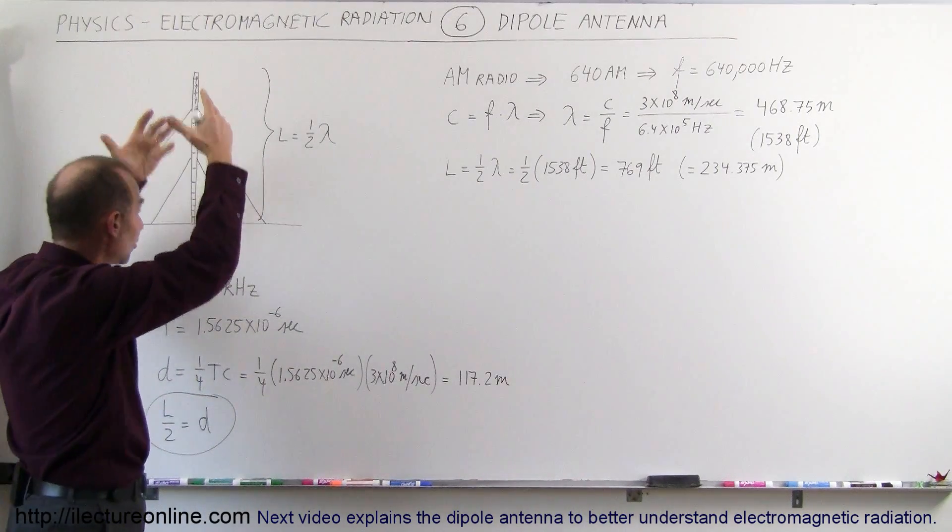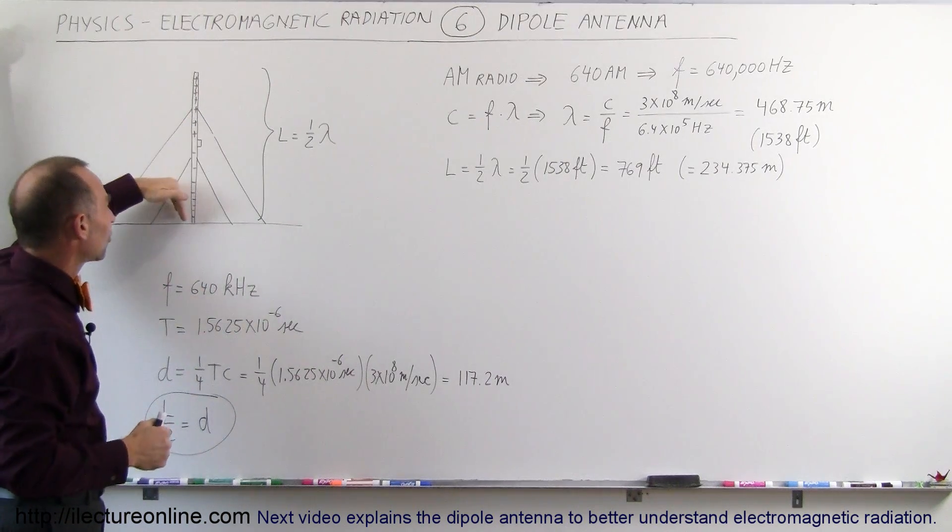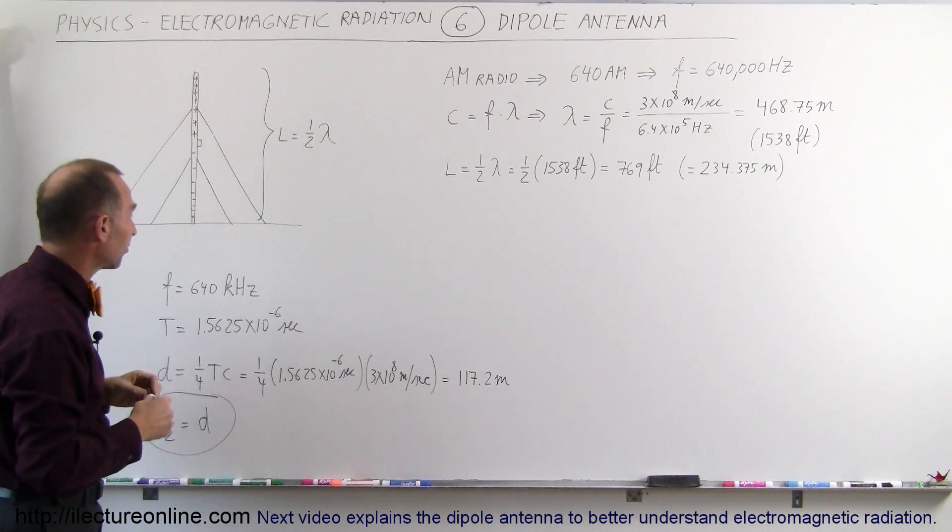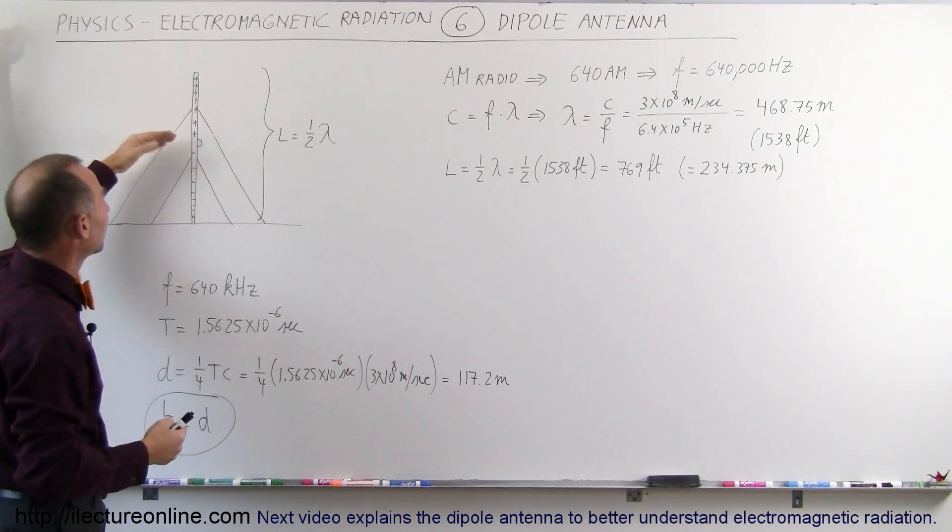So, we set a potential difference across the antenna. We send positive charge in one direction, negative charge in the other direction. Of course, that's not really the way it works. If we send negative charges this way, then this becomes positively charged because of lack of negative charges. And so, we have what we call a dipole at this point. That's why this is called a dipole antenna.